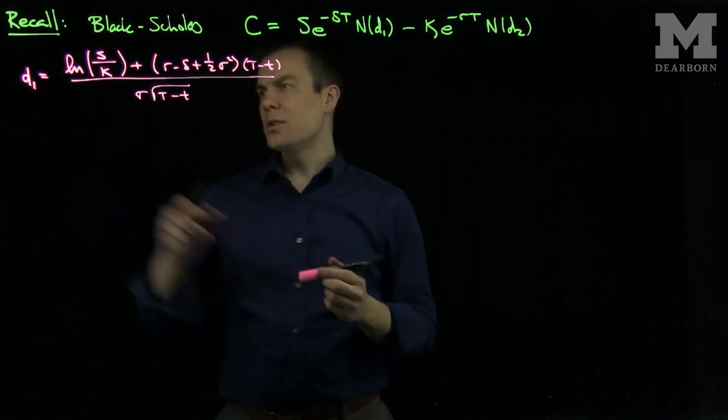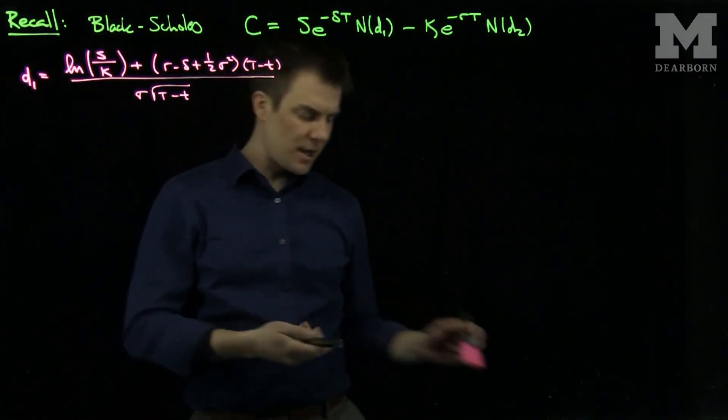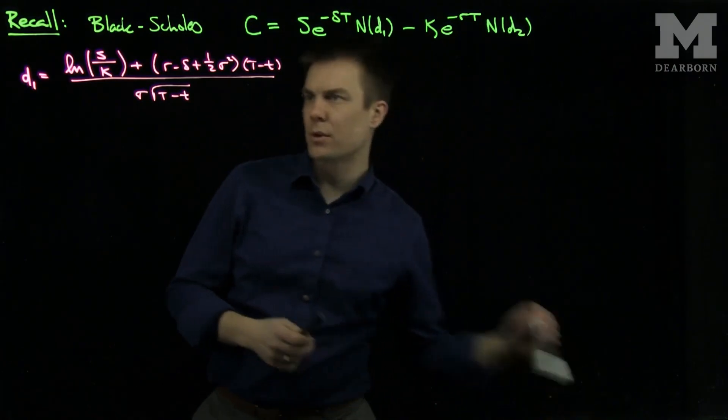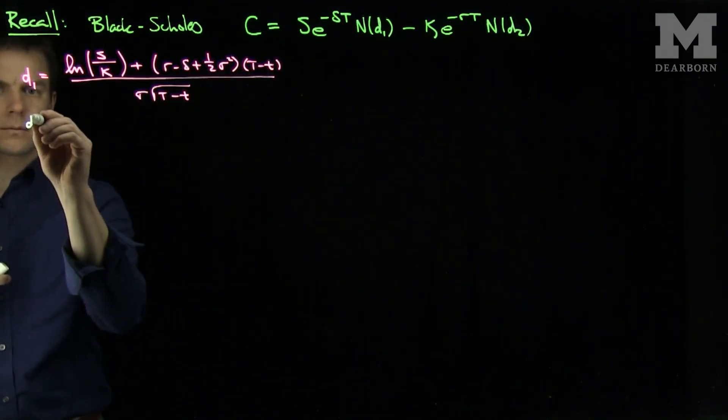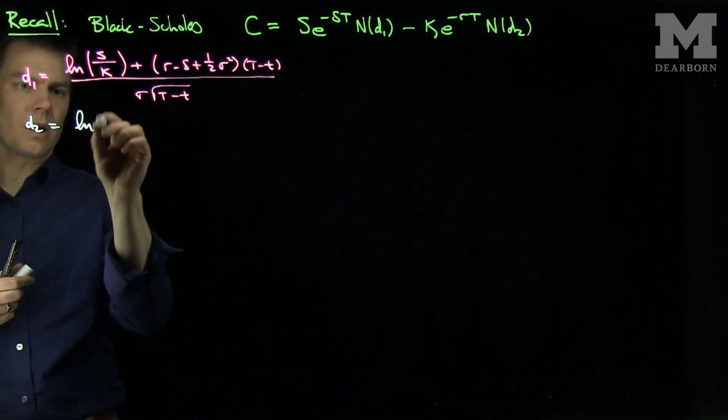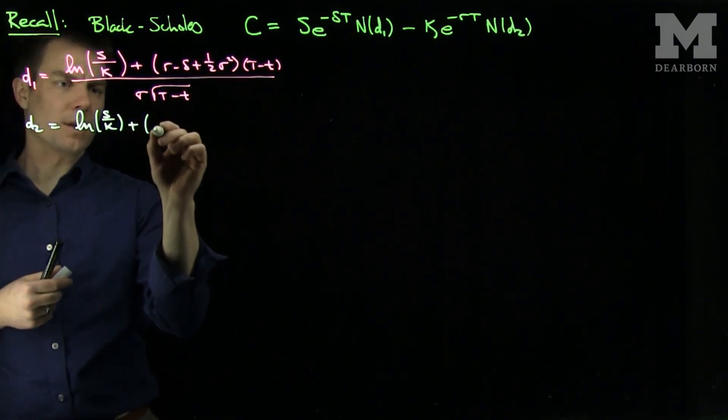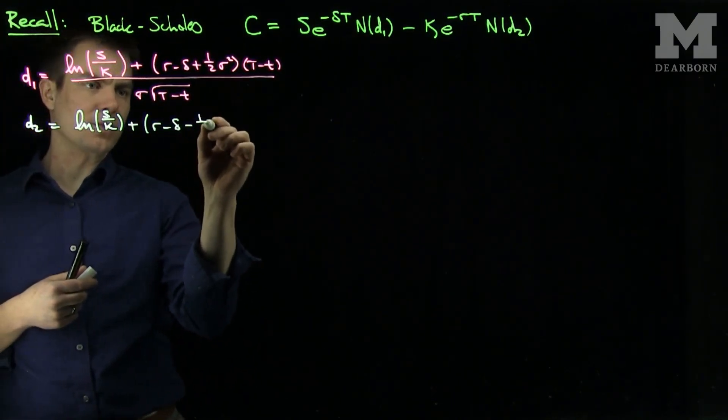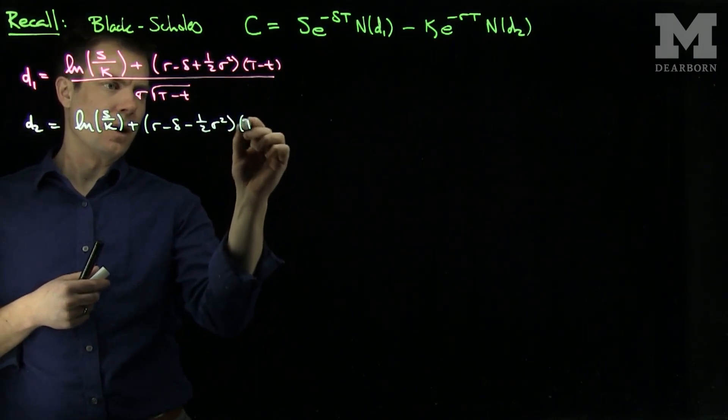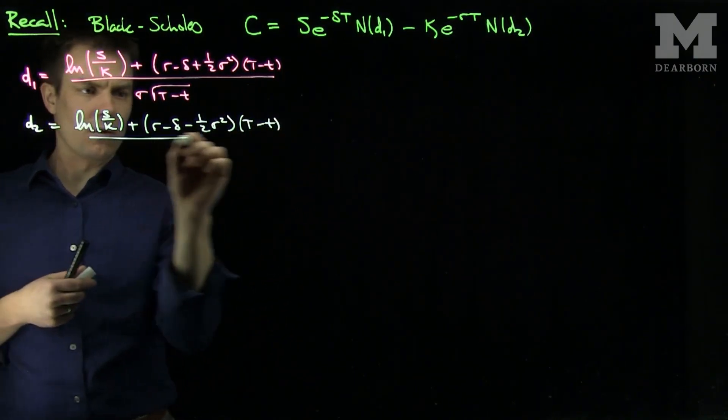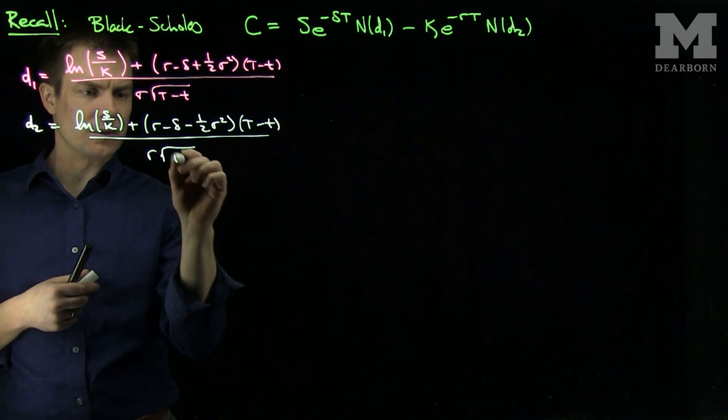And then d2 is the same as d1 with a negative sign here. So d2 is the log of s over k plus r minus delta minus 1 half sigma squared t minus t over sigma square root t minus t.